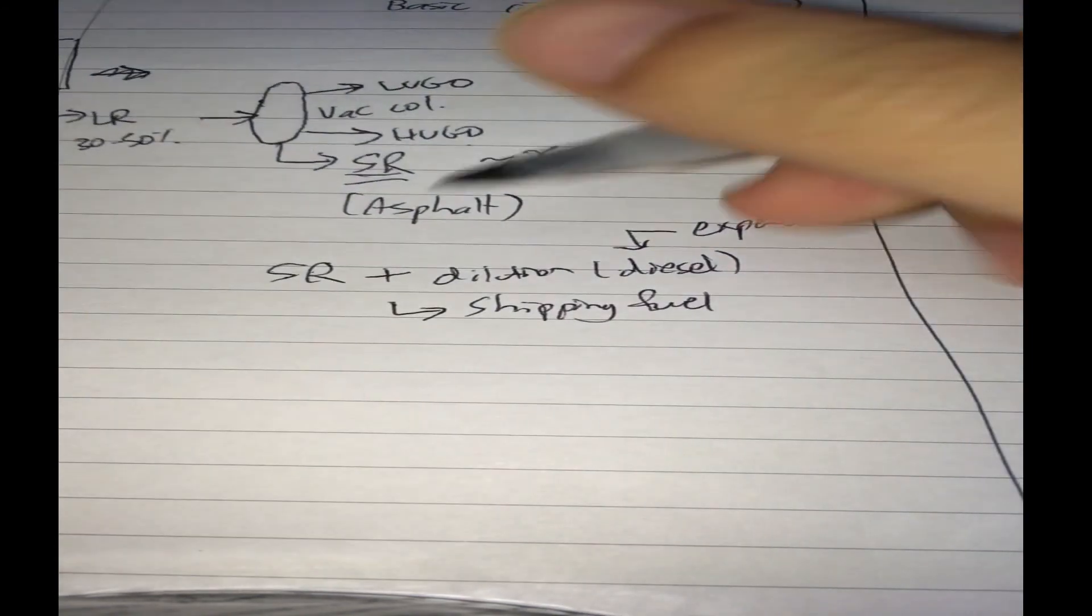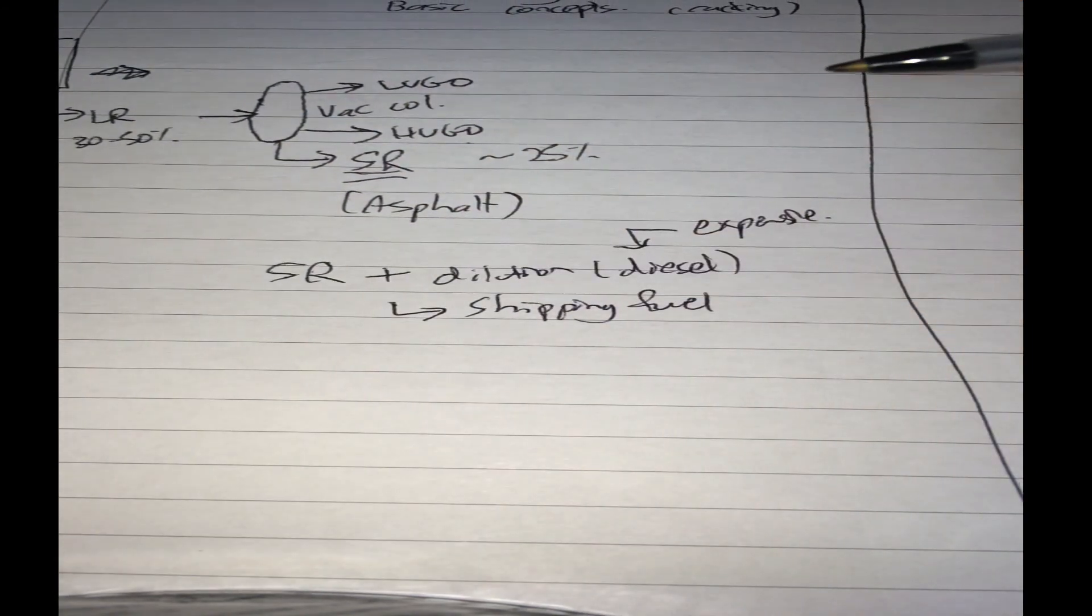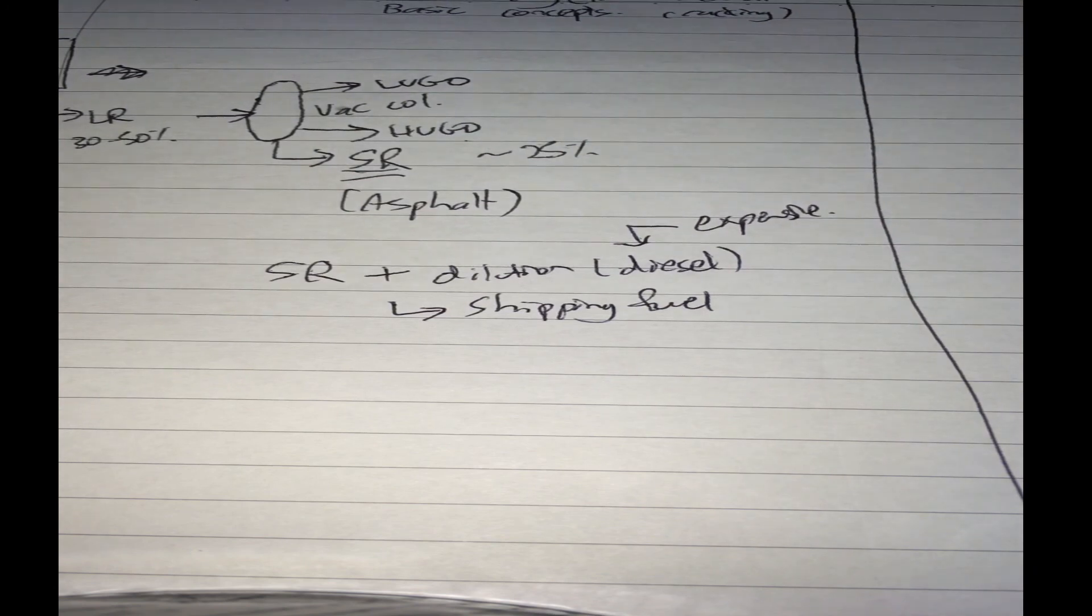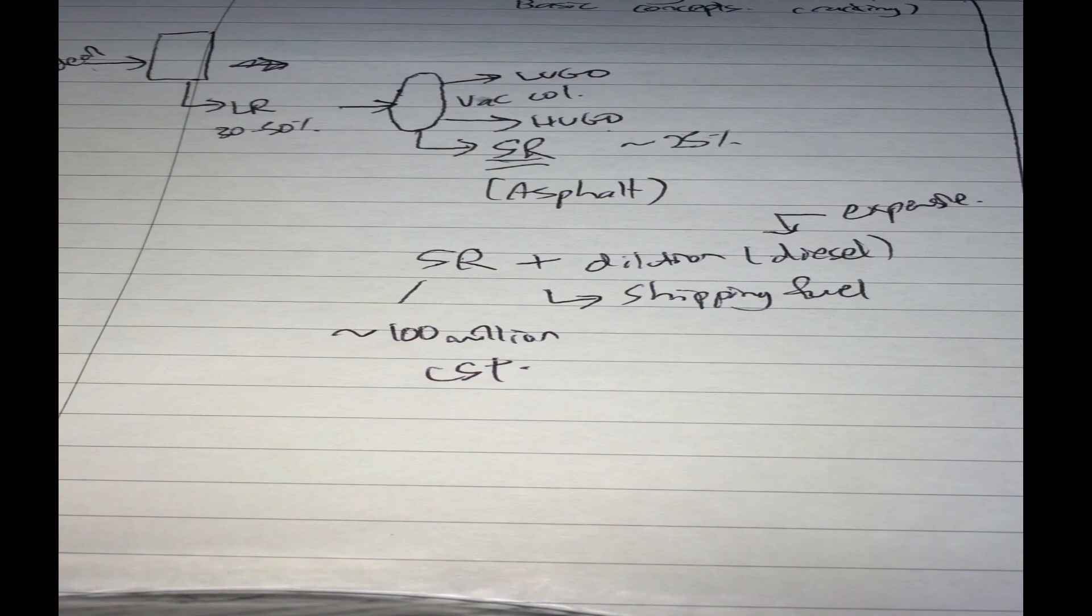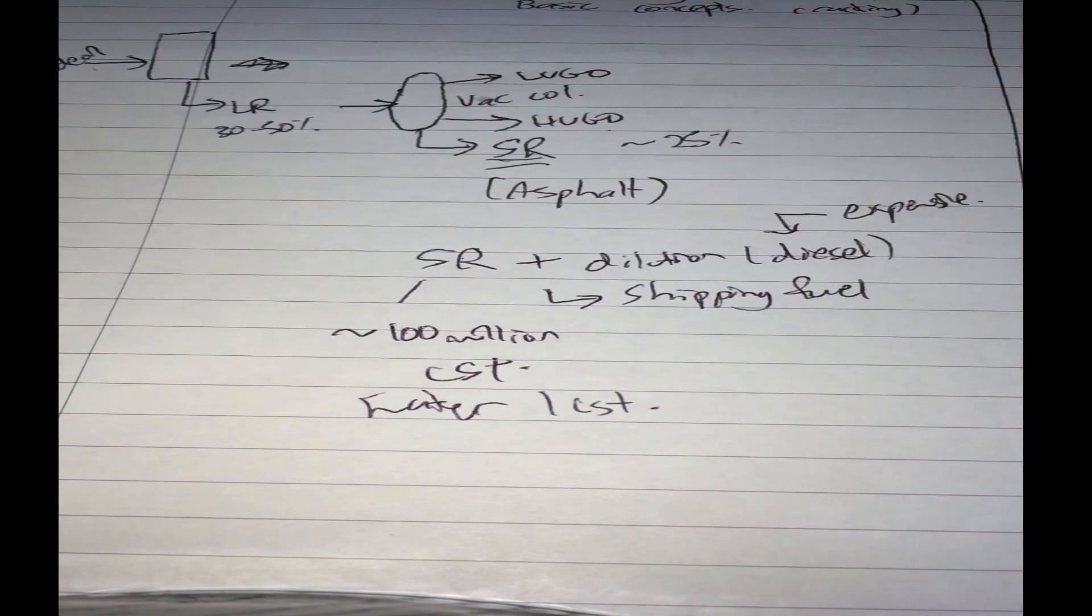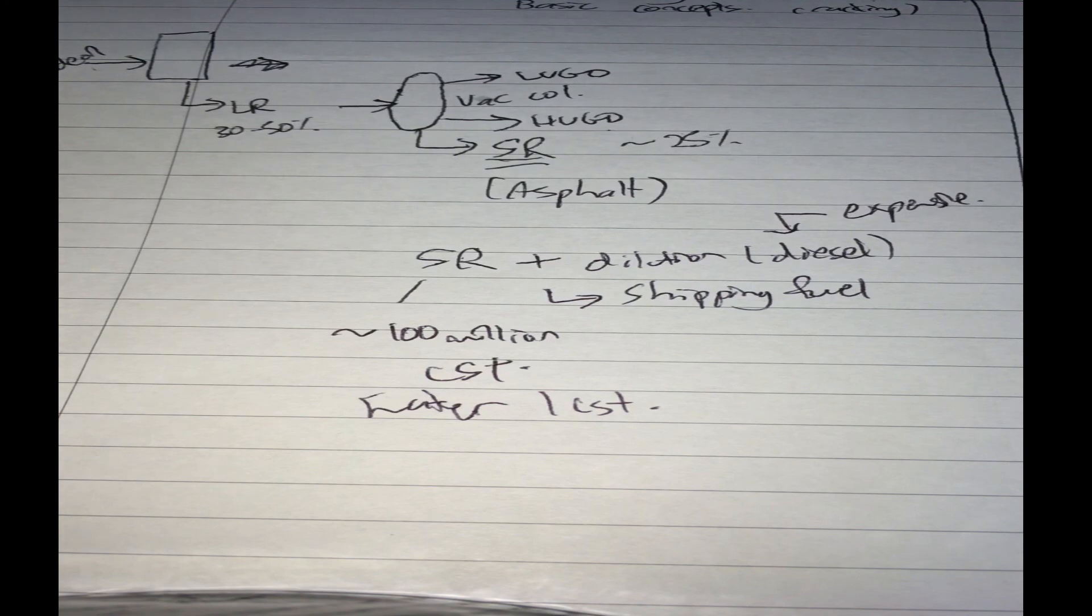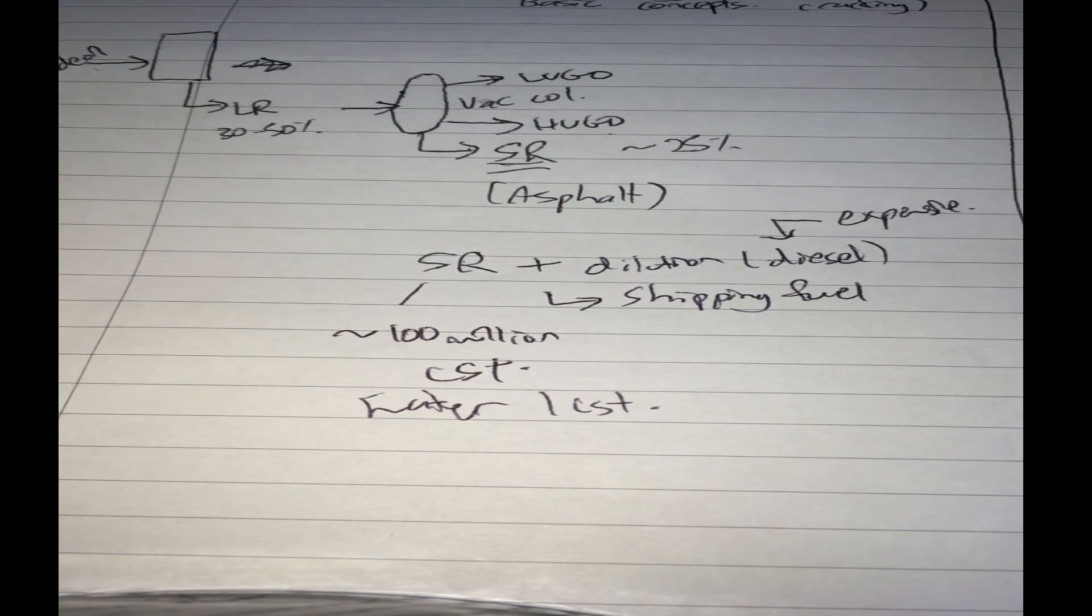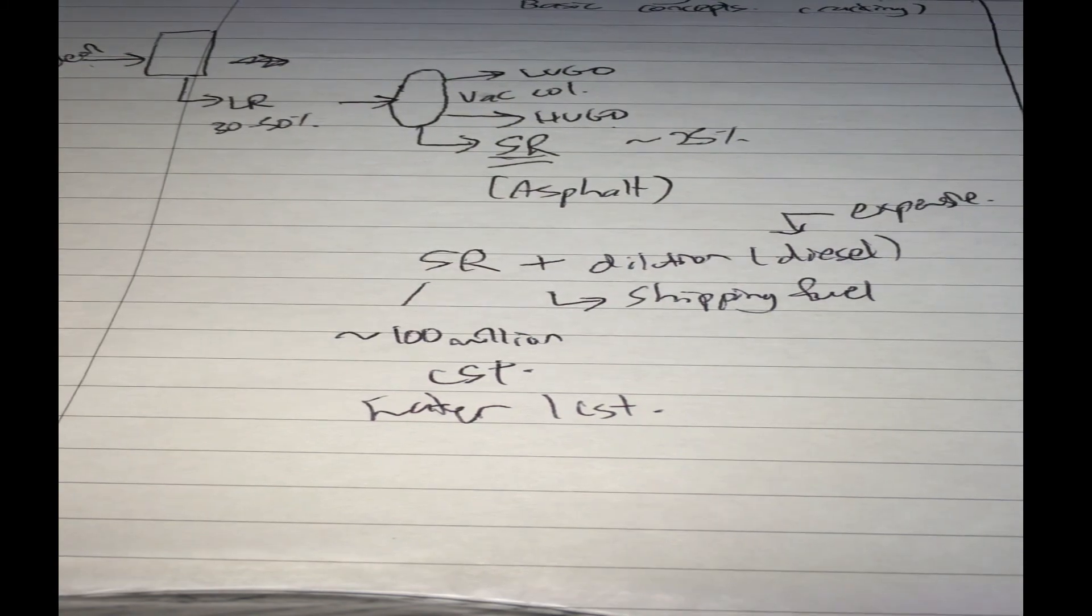So you want to minimize the amount of diesel used to dilute your short residue to reduce its viscosity so that the shipping fuel is usable for ships, on spec. Just to give you an idea how thick this is - it's about 100 million centistokes. Water is 1 centistoke and honey is about 1,000 to 10,000. This is very thick stuff and even if you put it in ships it's hard to make it run using this kind of fuel oil.